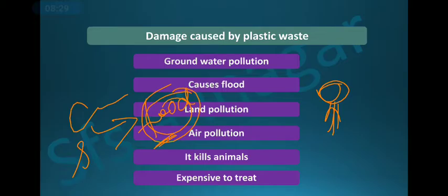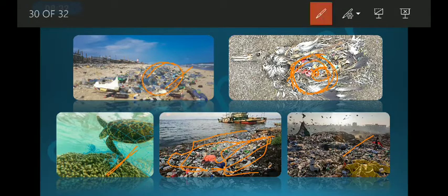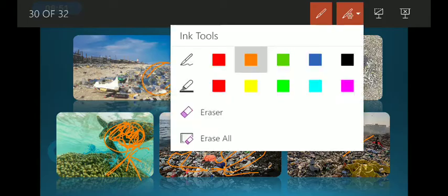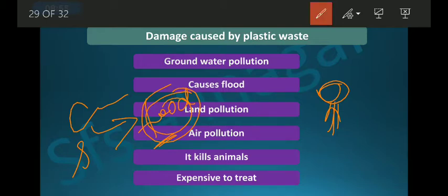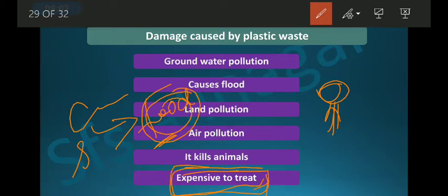In the marine system — in the sea — fishermen sometimes leave their nets behind. Marine animals get stuck in those nets. Additionally, treating and decomposing plastic waste is very expensive and difficult to manage.